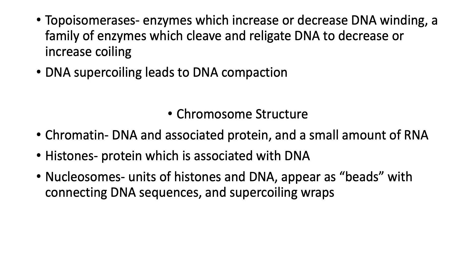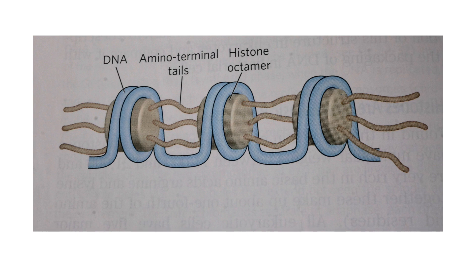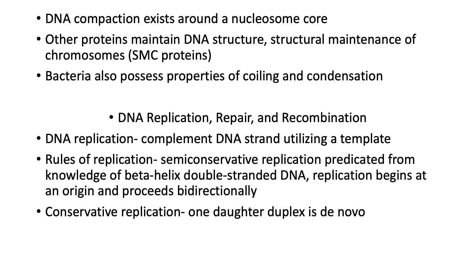Chromosome structure: Chromatin is DNA and associated protein and a small amount of RNA. Histones are proteins which are associated with DNA. Nucleosomes are units of histones and DNA, and they appear as beads with connecting DNA sequences and supercoiling wraps. Under the microscope you have the DNA strand coiling around the histone octamer with amino terminal tails comprised of protein in between. DNA compaction exists around a nucleosome core. There are other proteins which maintain DNA structure — structural maintenance of chromosomes — we call these SMC proteins. Bacteria also possess properties of coiling and condensation.